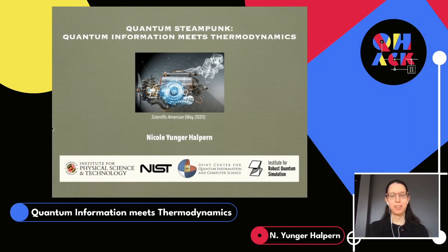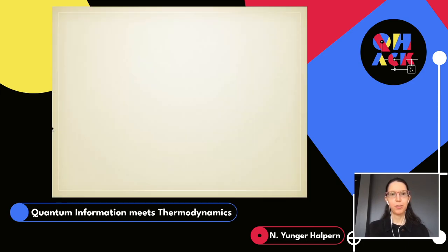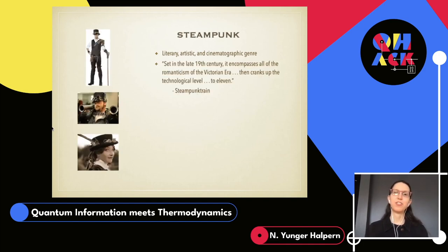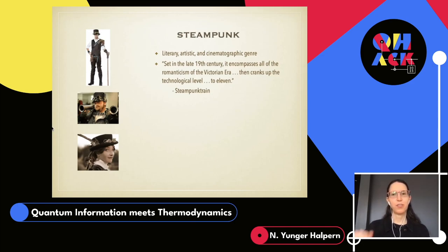Thanks for having me here, and thanks to everybody who's sticking around till the end of the day. I'd like to begin with a technical term: steampunk. Steampunk is a genre of literature, art, and film. One of my favorite descriptions is: set in the late 19th century, it encompasses all of the romanticism of the Victorian era, then cranks up the technological level to 11.